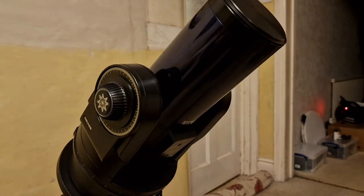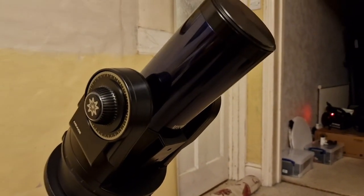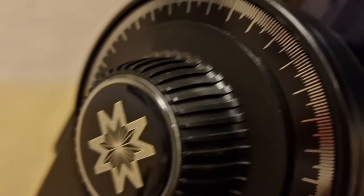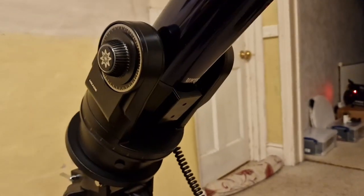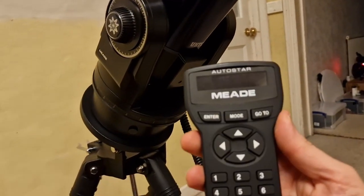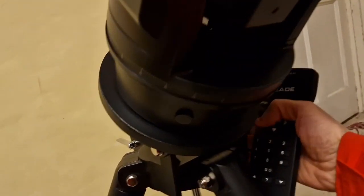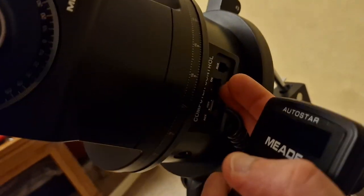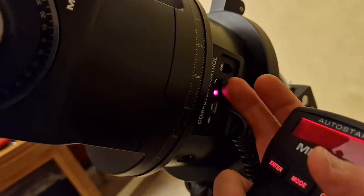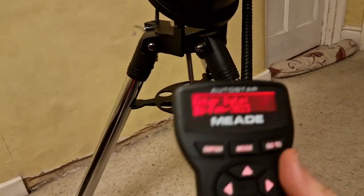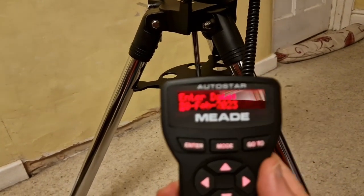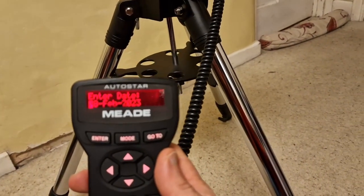That's the basic setup for polar alignment. You then can take the controller, which we've got here, and switch on the power, which is still on the west side. Everything's still on the west side. There's the power switch—turn that on, get a nice light.